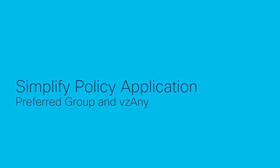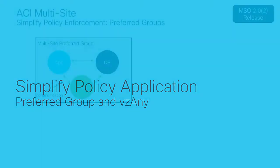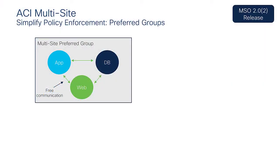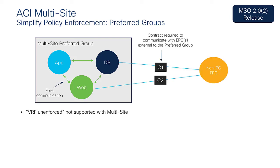The preferred group functionality, supported on the Multisite Orchestrator from release 2.0.2, allows specifying a subset of EPGs in a VRF that can communicate freely without requiring any contract — equivalent to a VRF unenforced mode. Free communication is only between EPGs that are part of the preferred group; communication with EPGs outside the preferred group still requires a regular contract.